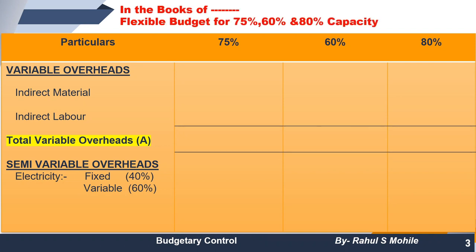Now we will prepare the format. The format is as follows — this part is quite important. First write the heading: 'In the books of [Dash]' since the company name is not given. Then write 'Flexible Budget for 75%, 60%, and 80% capacity.' The columns are: Particulars, 75% (given information), 60% (to prepare), and 80% (to prepare).